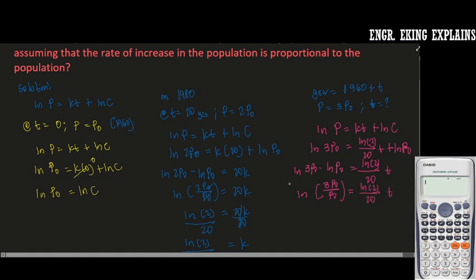so we just multiply both sides by 20 over ln 2. So we'll be left with, this will be also cancelled out, so we'll be left with ln 3. So 20 ln 3 over ln 2, and for the other side of the equation, that will be cancelled out.